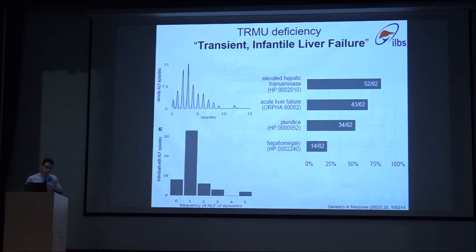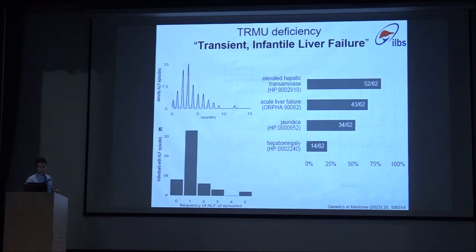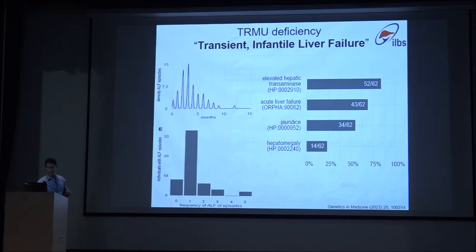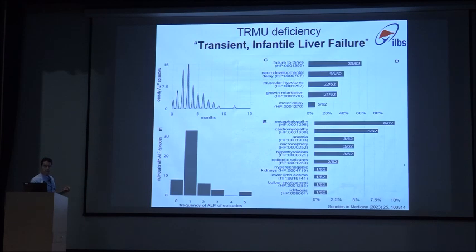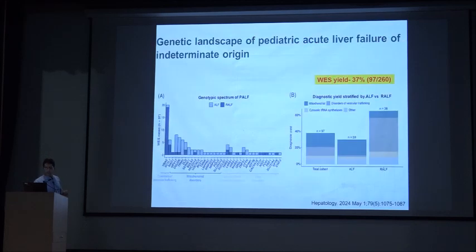In response to a question about liver biopsy in NBAS: mostly it shows steatosis with minimal inflammation and some necrosis — steatosis is the predominant finding. Regarding TRMU: looking at the density of ALF episodes, there is no episode after 10 months of life. Majority will have one episode, but some patients may have up to five ALF episodes in their natural history, with possible multisystem involvement including developmental delays and hypertonia.